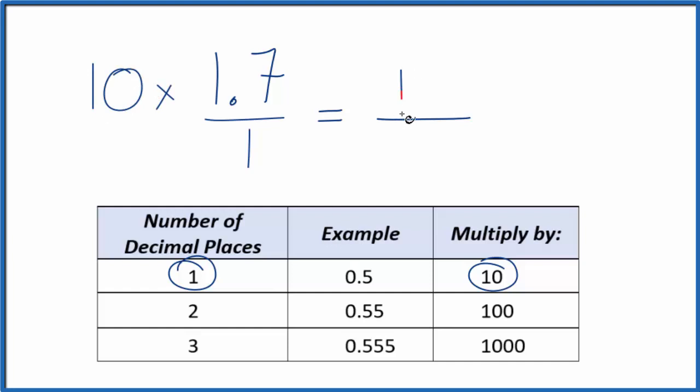That'll give us 17, a whole number, but that's not equal to 1.7. We have to multiply the bottom of our fraction by 10 as well. 10 times 1 is 10, and now we have 17 tenths.